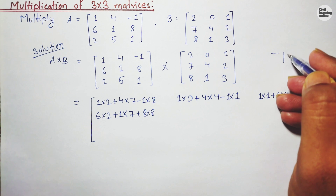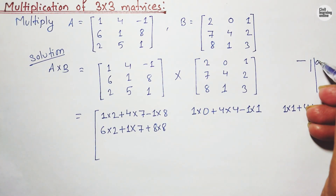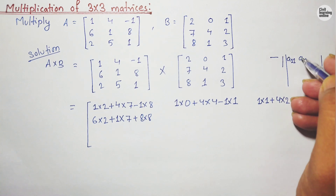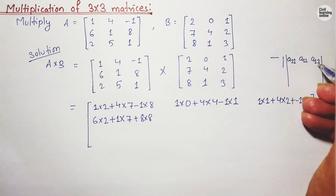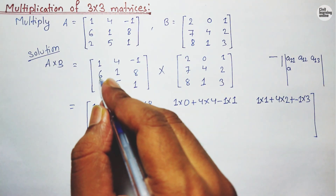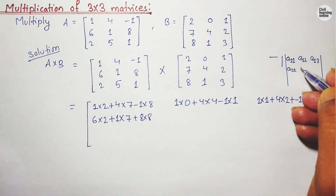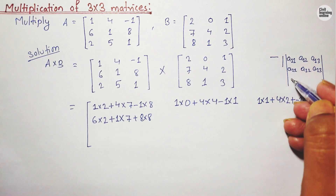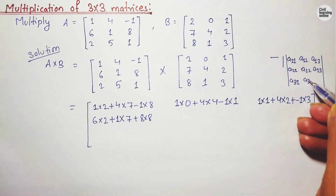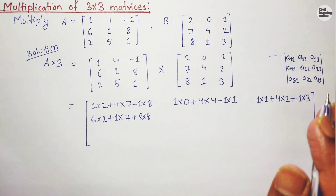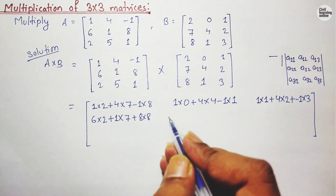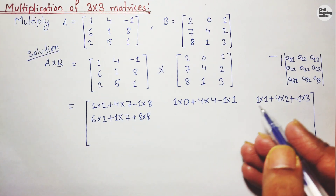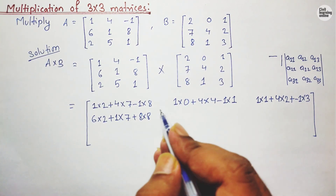For example, a(1,1) is first row first column, a(1,2) is first row second column, and a(1,3) is first row third column. Element 6 is a(2,1) — second row first column. a(2,2) is second row second column, a(2,3) is second row third column. a(3,1) is third row first column, a(3,2) is third row second column, and a(3,3) is third row third column. That is just the numbering of the elements of a matrix.